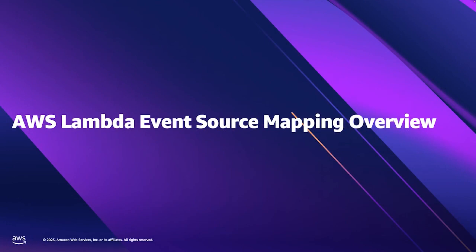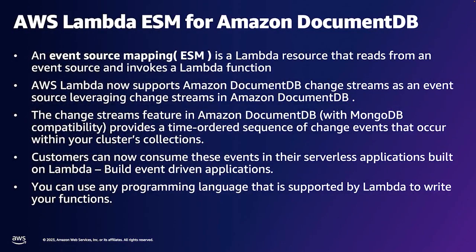Coming to today's topic — event-driven applications. What drives the framework of event-driven applications? That's AWS Lambda event source mapping. AWS Lambda is one of our primary serverless services. It gives you the ability to run code without upfront provisioning of infrastructure. An event source mapping is a Lambda resource — it's the trigger button that you click and configure. It's a mechanism for invoking the Lambda function whenever an event happens, and in our case, that event is Amazon DocumentDB's change stream.